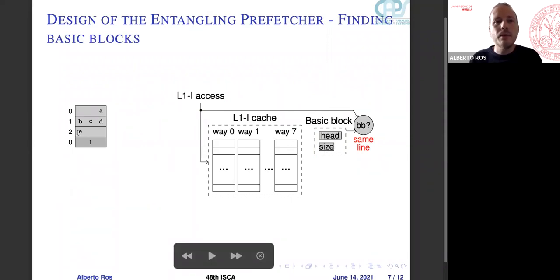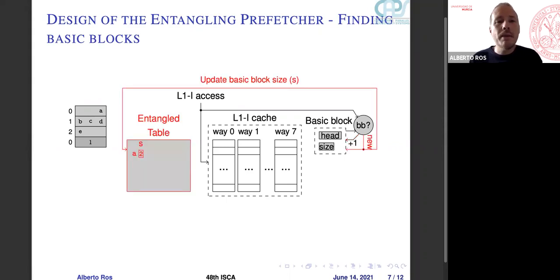But if we access D and then we access E, we will notice that that is the next cache line. It's the cache line plus one, and then we increase the size. When none of these two cases happen, we will say that it's a new basic block. So we copy the size into a structure where we track what we learn, which is the entangling. In this case, we will track that the head of basic block A has a size for the basic block of two more cache lines.